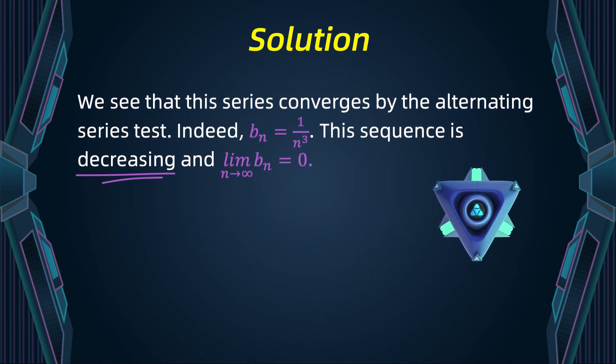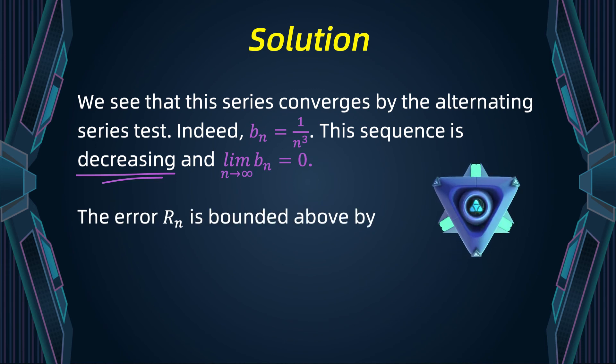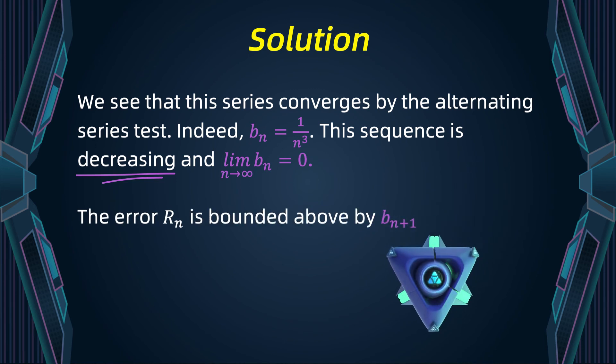Remember our goal. We want to approximate the exact value of the series by an error less than or equal to 0.001. To do that, we use that Rn, the error, is bounded above by bn plus one. This is equal to one divided by n plus one cubed.